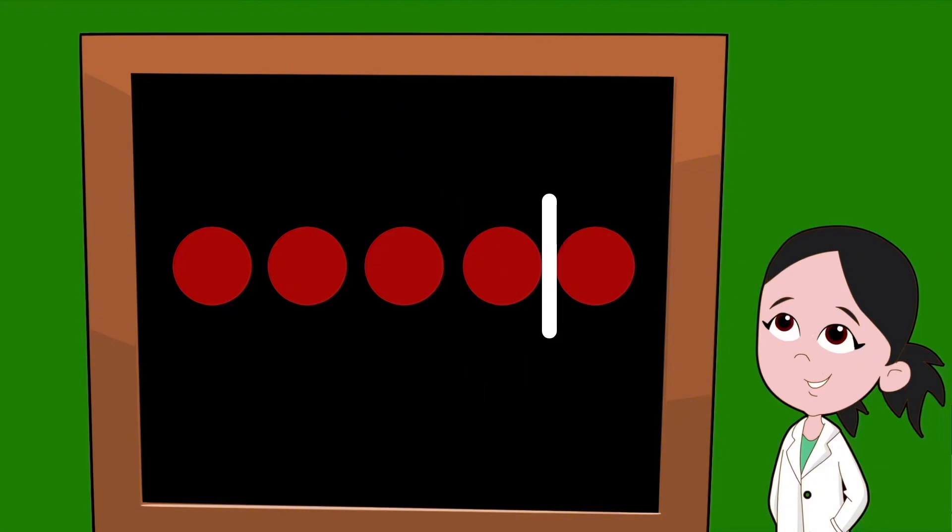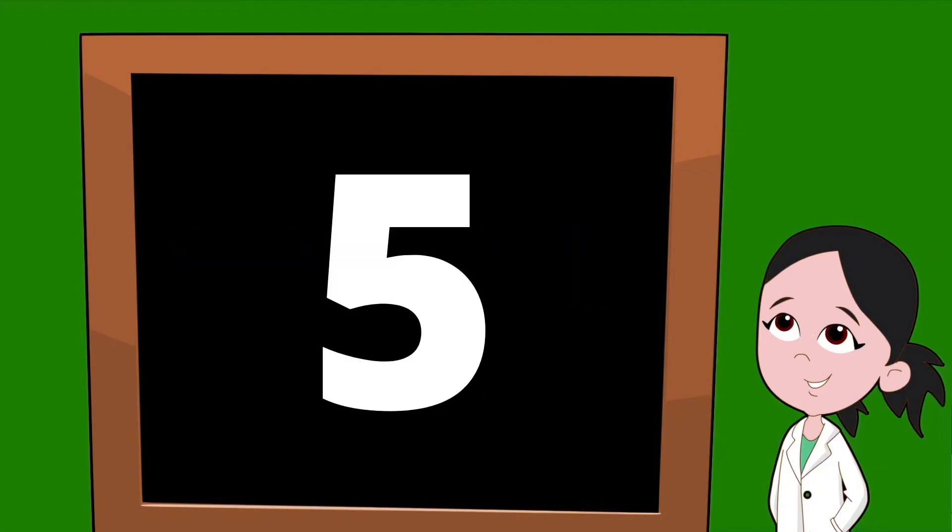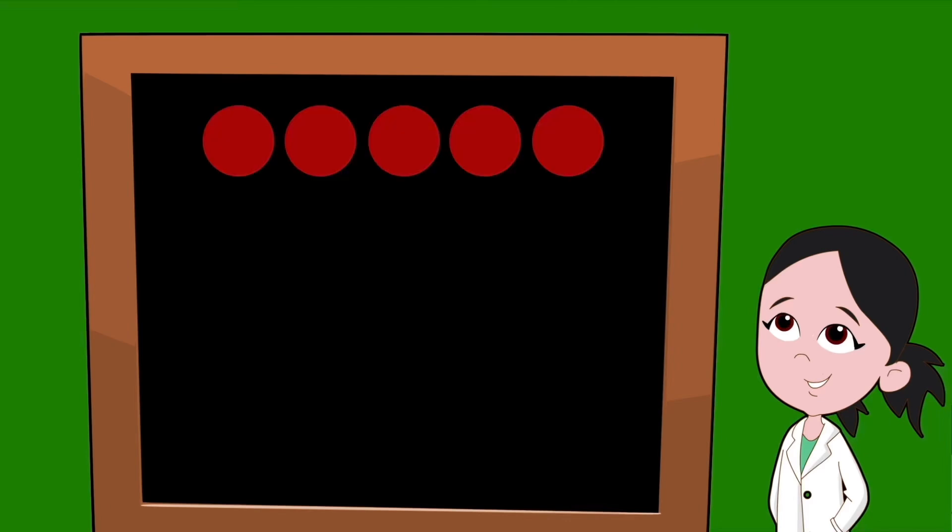Let's get started with the number five. We'll have our five dots. For the number five, we're going to have four sets of partners. Let's split our dots up, starting with one dot on the left.